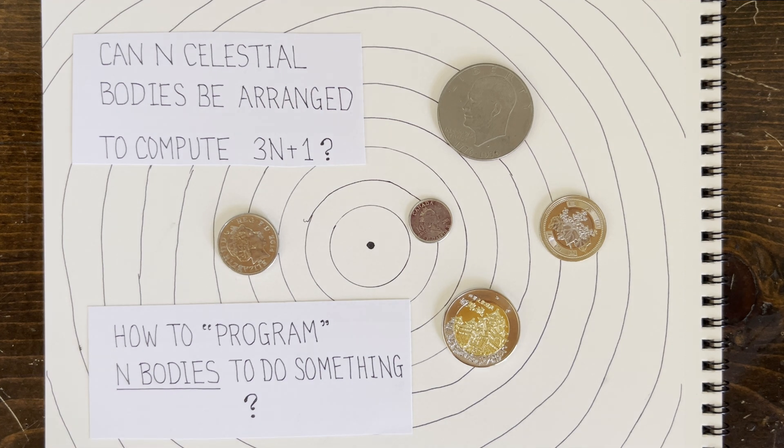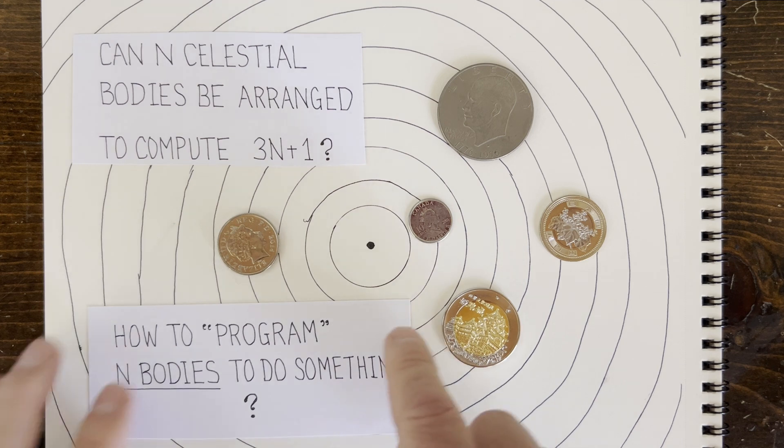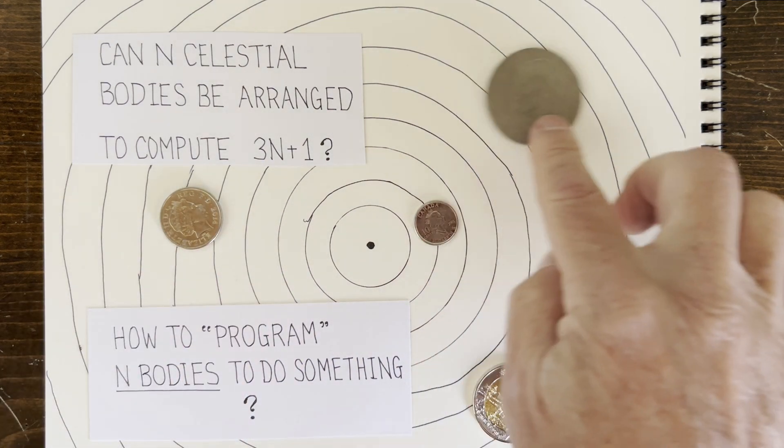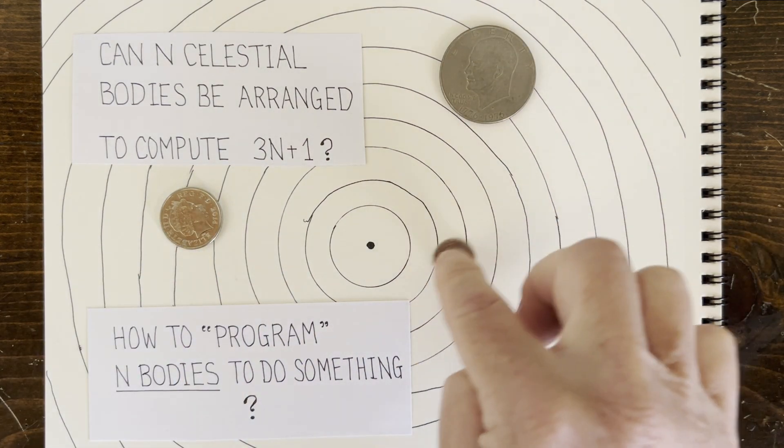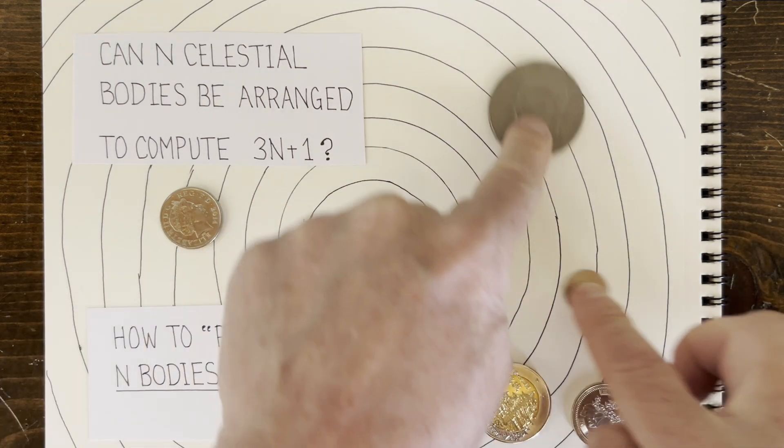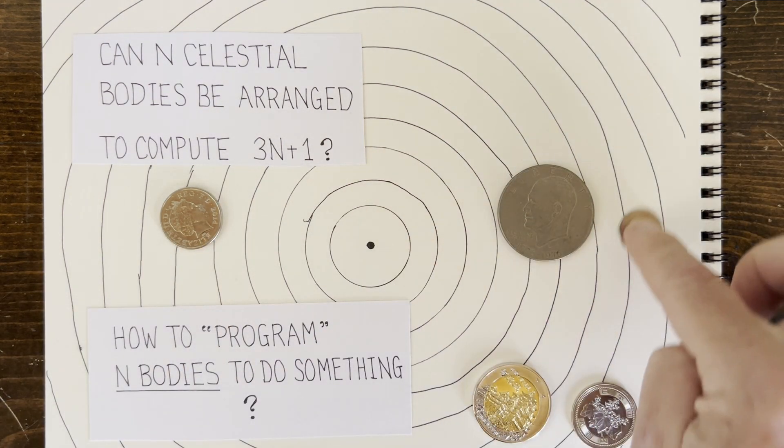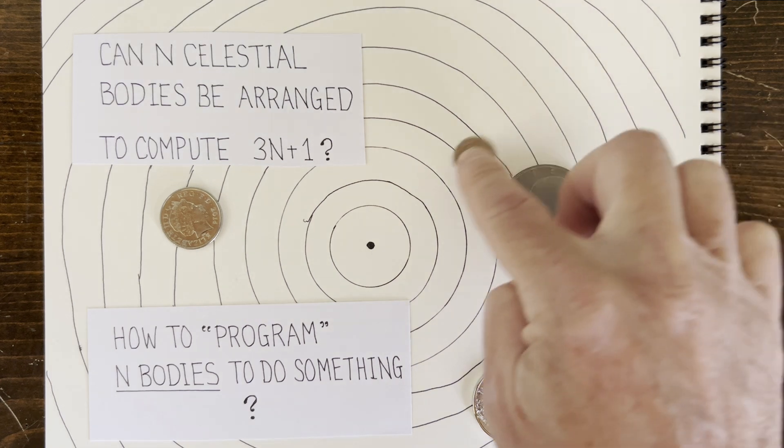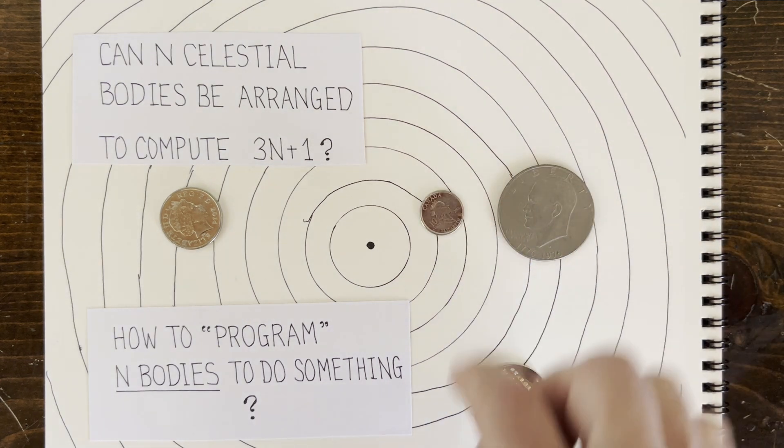So starting simple, suppose we wanted our tiny 3n plus 1 satellite to follow a circular orbit between rings 1 and 2, or rings 1 and 7. Well, we just put a massive planet between those rings and give the satellite an initial appropriate push.